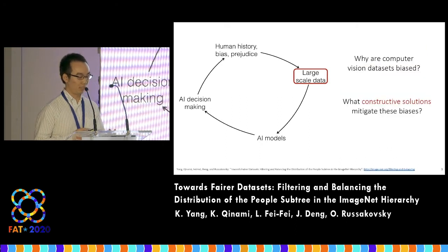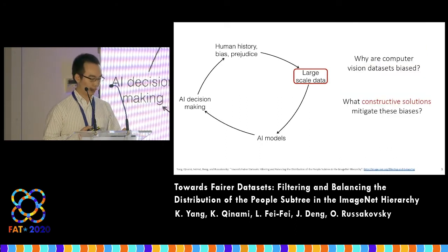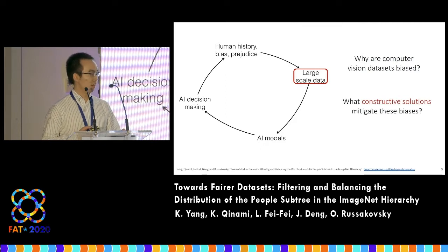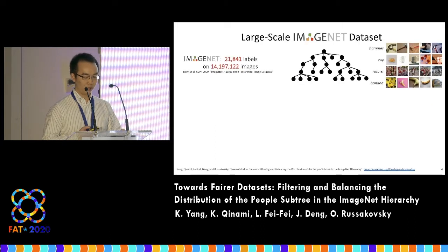In this work, we take a few steps towards answering the question of why are computer vision datasets biased and what constructive solutions can we take to mitigate these biases? To do so, we consider one of the arguably most influential datasets of computer vision, ImageNet.